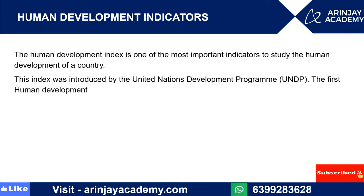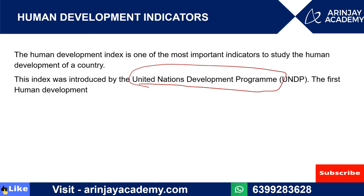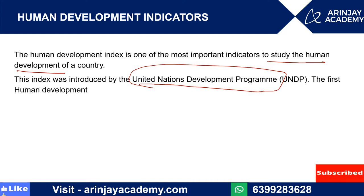What is the Human Development Indicator? The Human Development Indicator is basically an index which is prepared by UNDP, and they issue one index for each country. The Human Development Index is one of the most important indicators to study human development and human resources development.